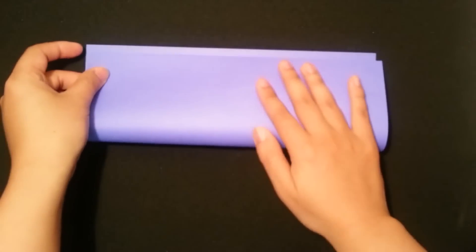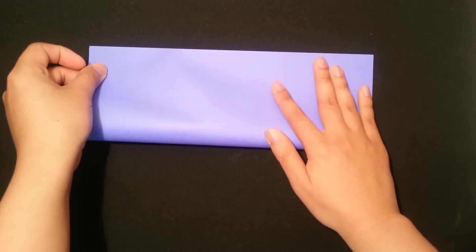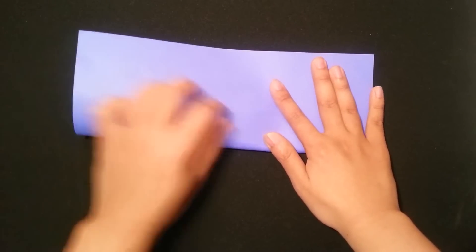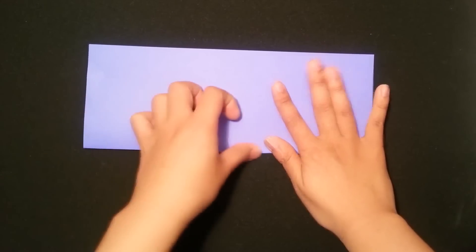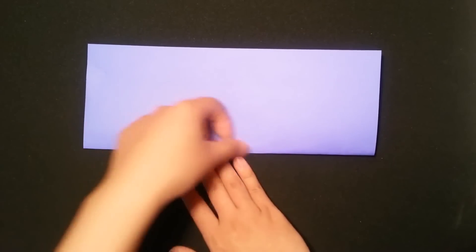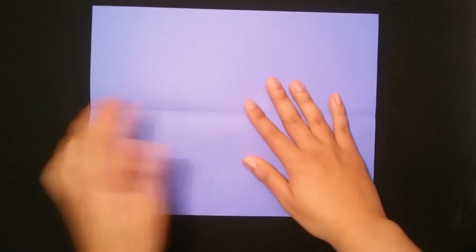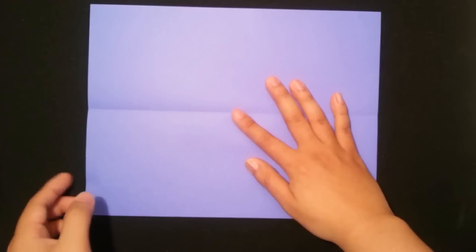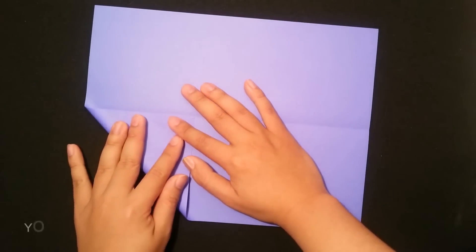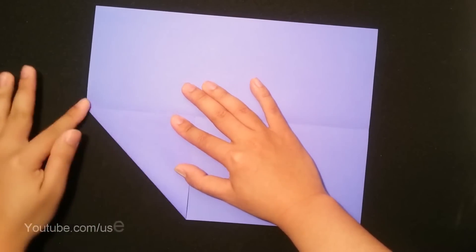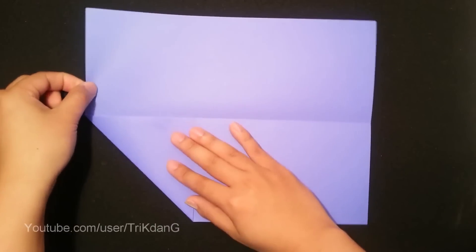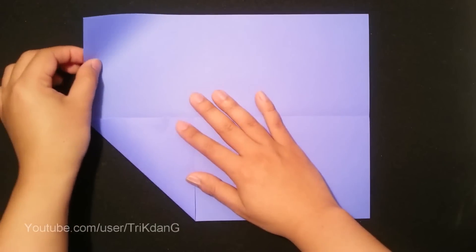As you know, to fold the arrow, we have to fold it in half first. Next step, we will start from this edge and fold it to the center crease. Very basic. And then we repeat the same step for the other side.